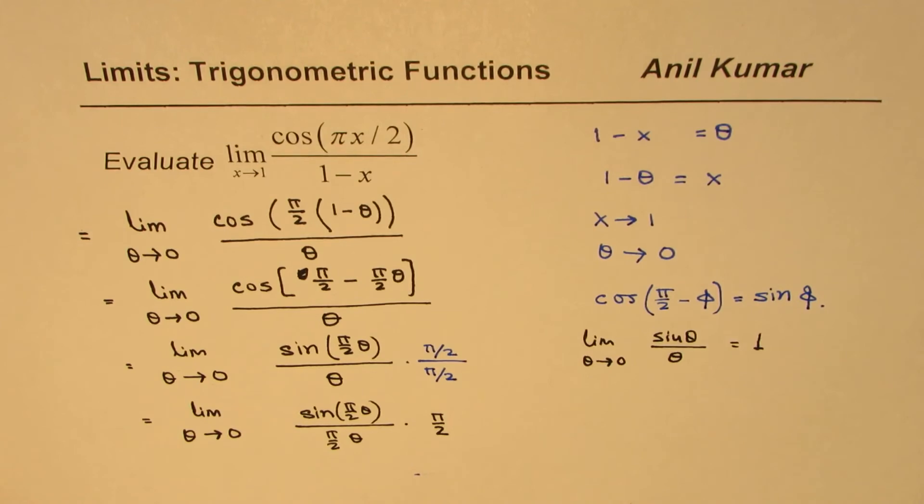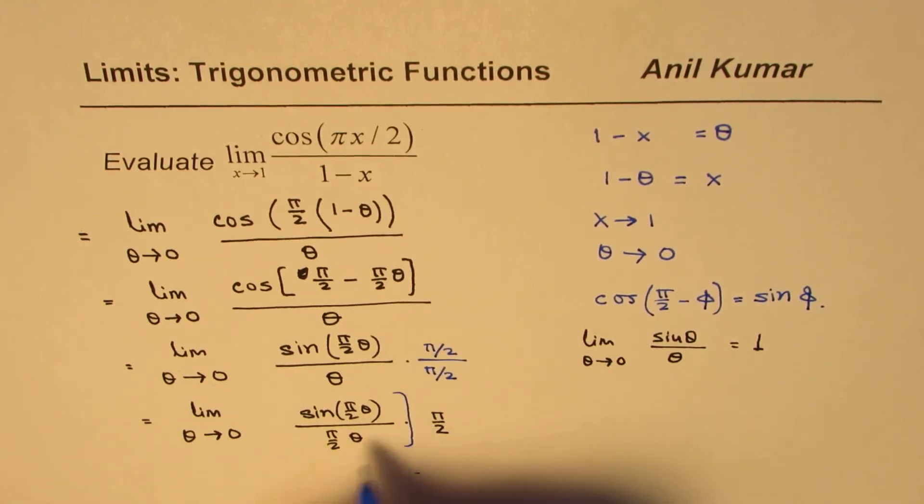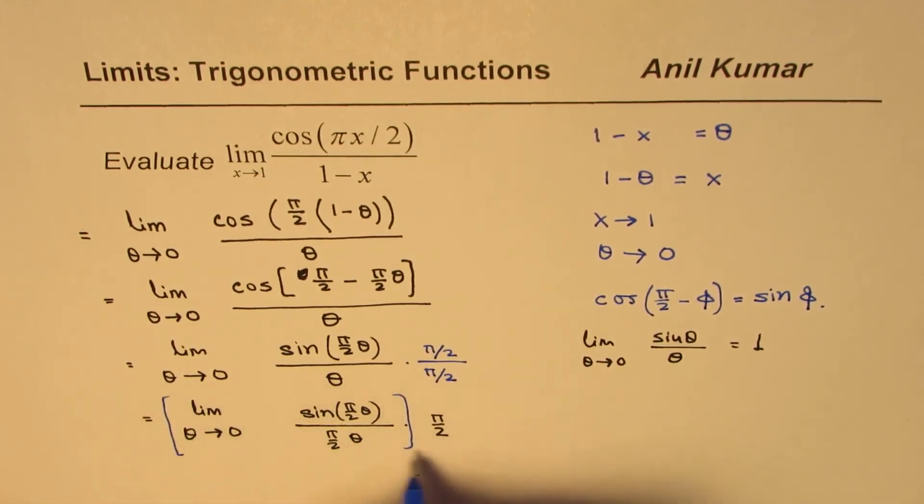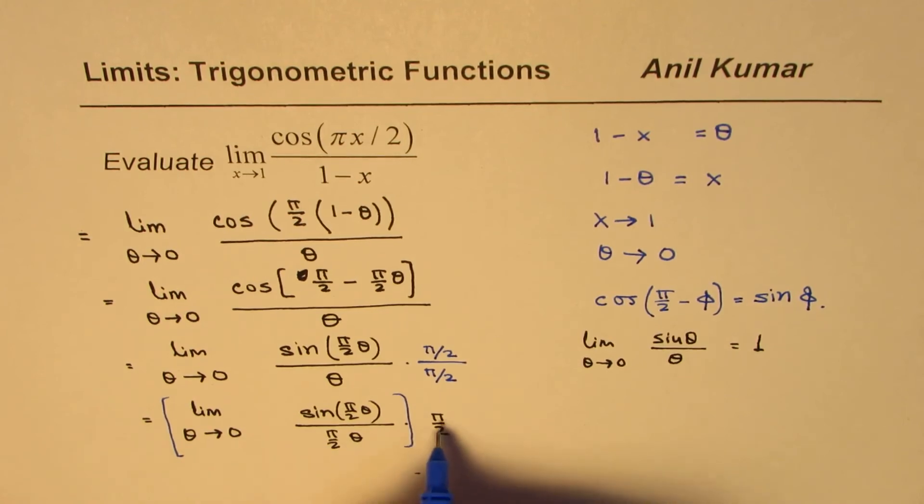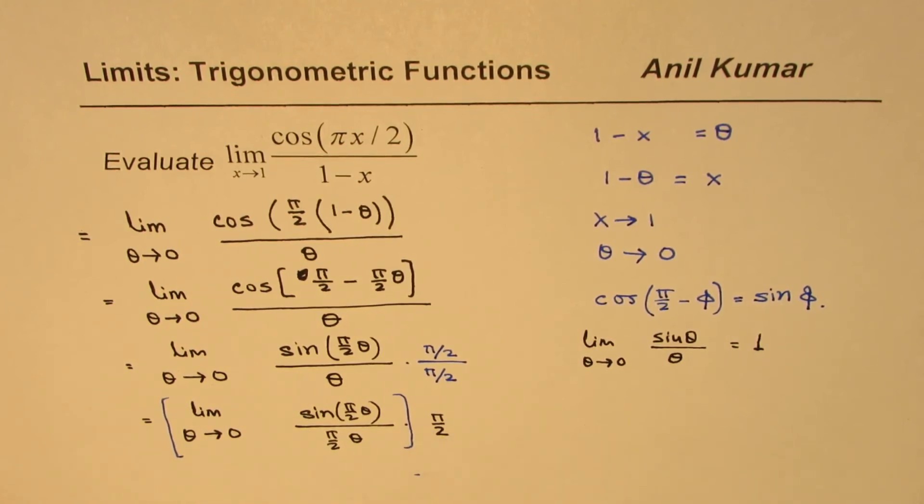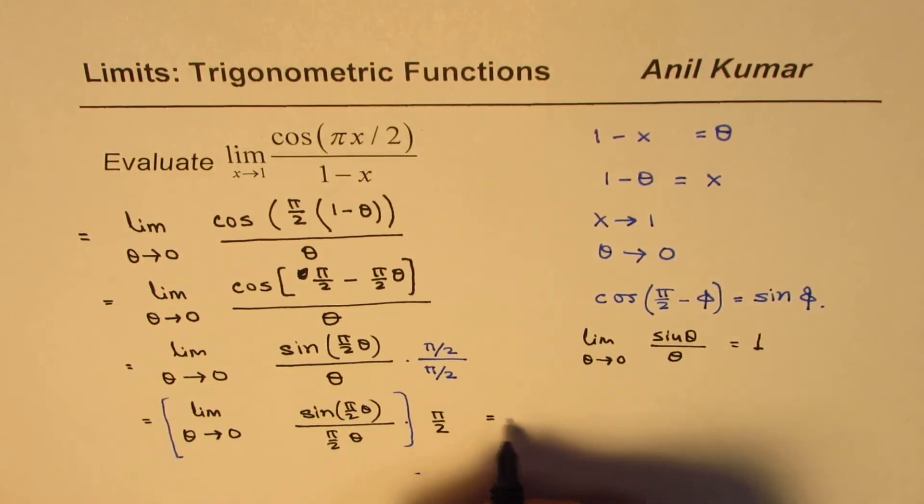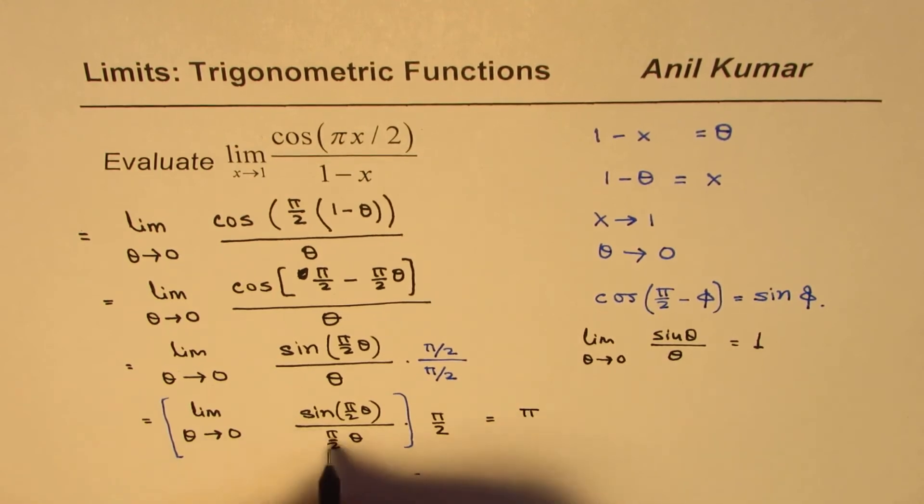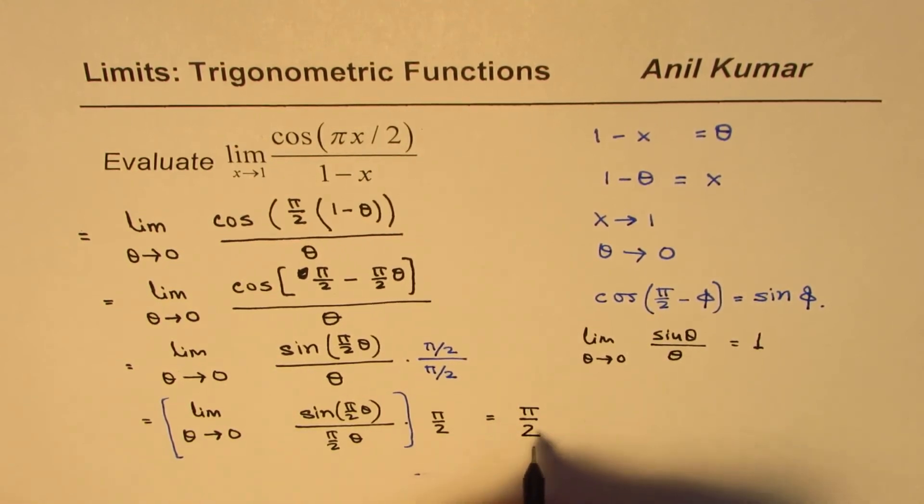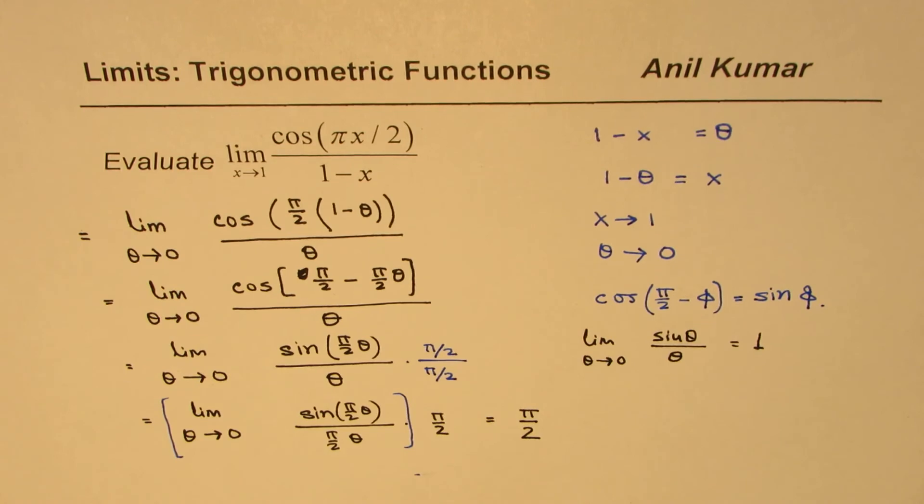Now, this part of the limit is 1 and θ does not really affect π/2. So we could write down our answer as equal to: the limit of this function is π/2. So we get π/2 as the answer for this particular limit.